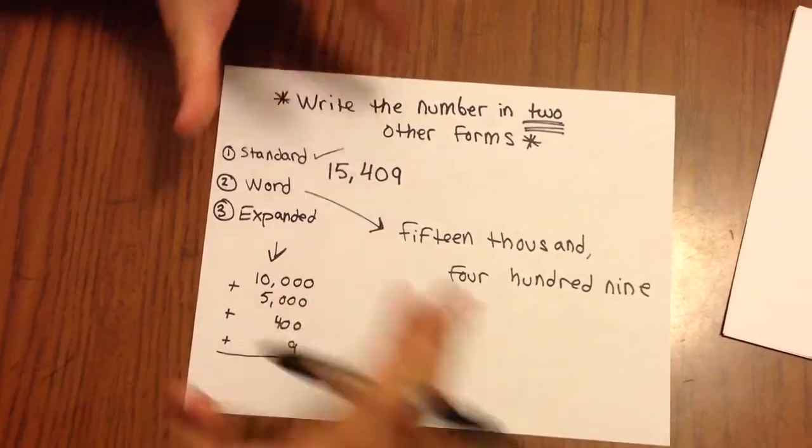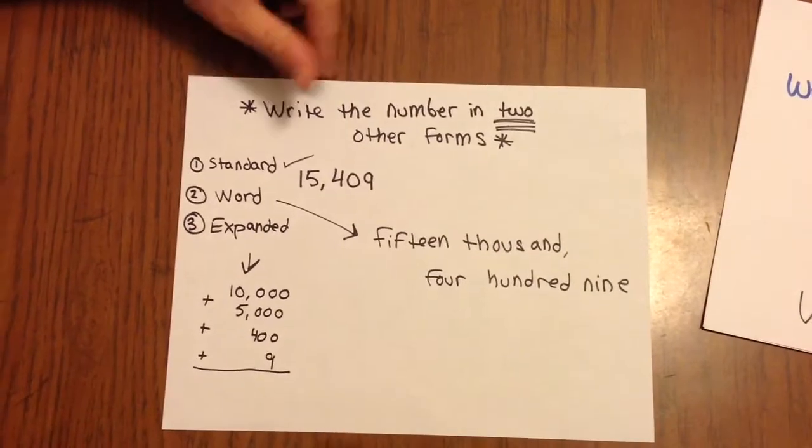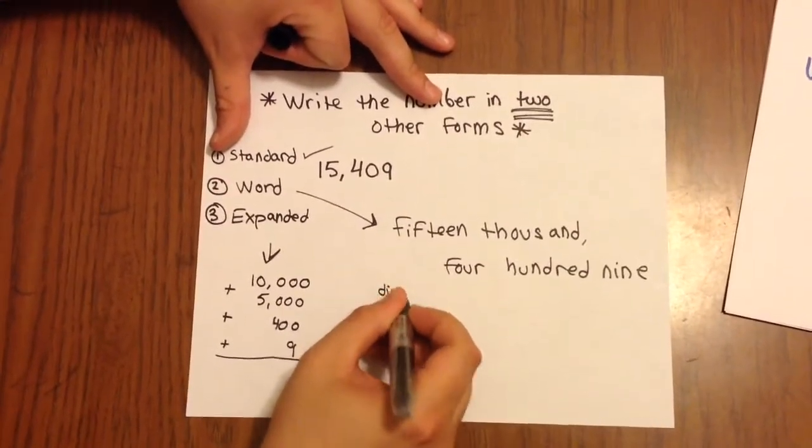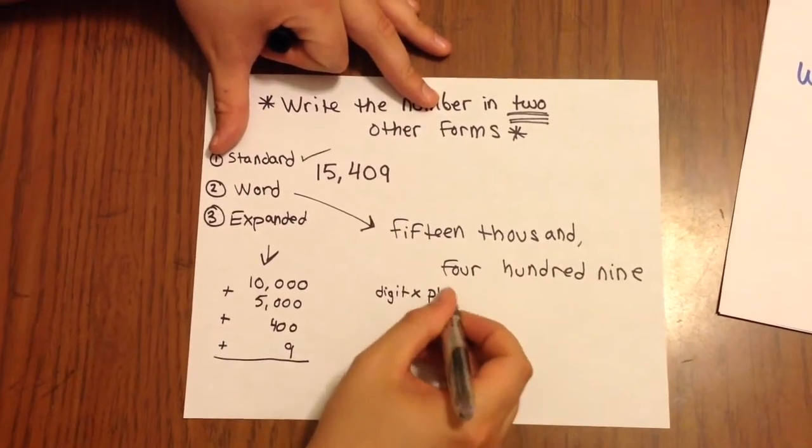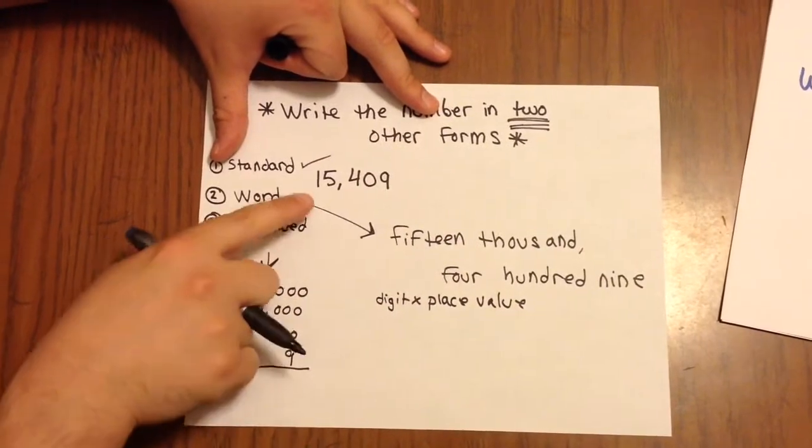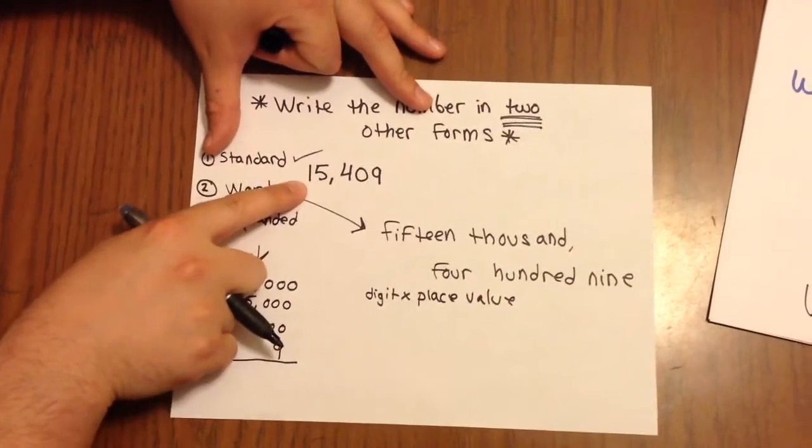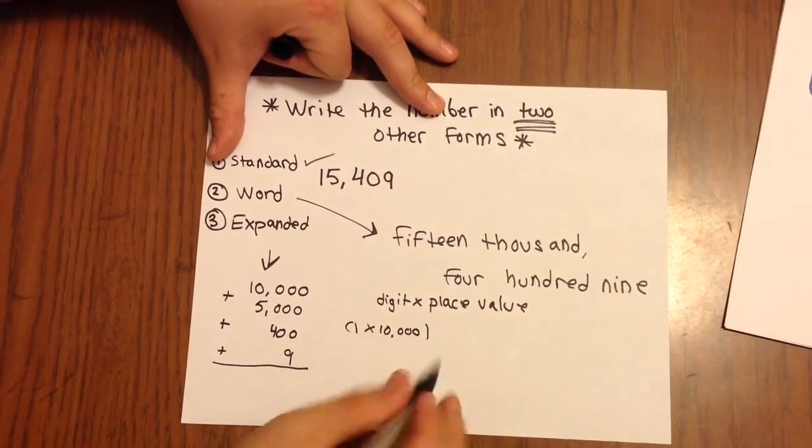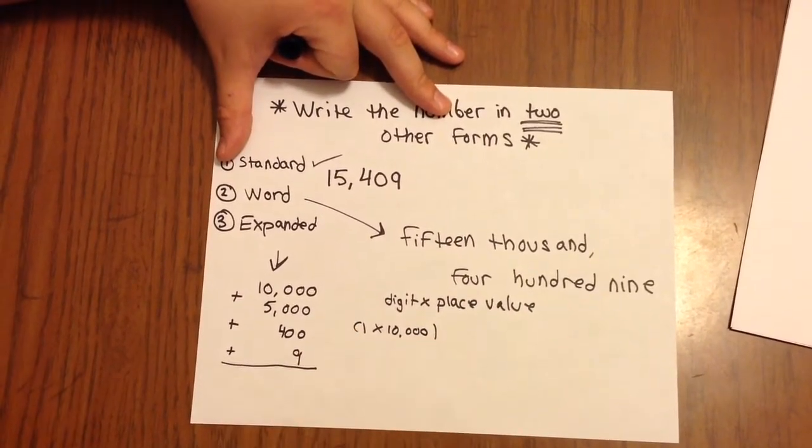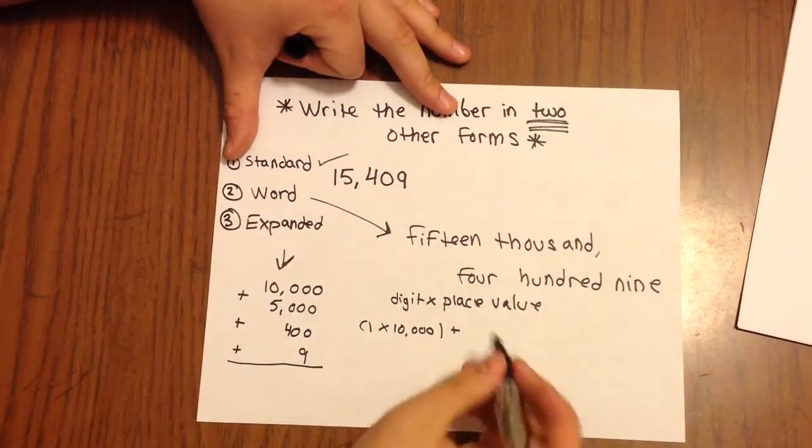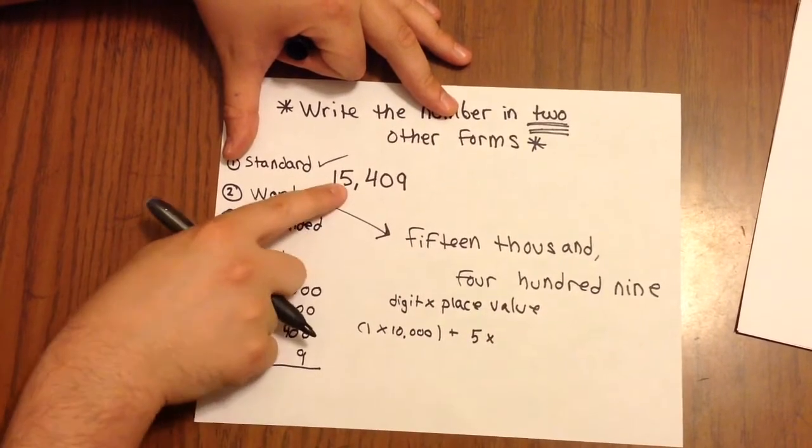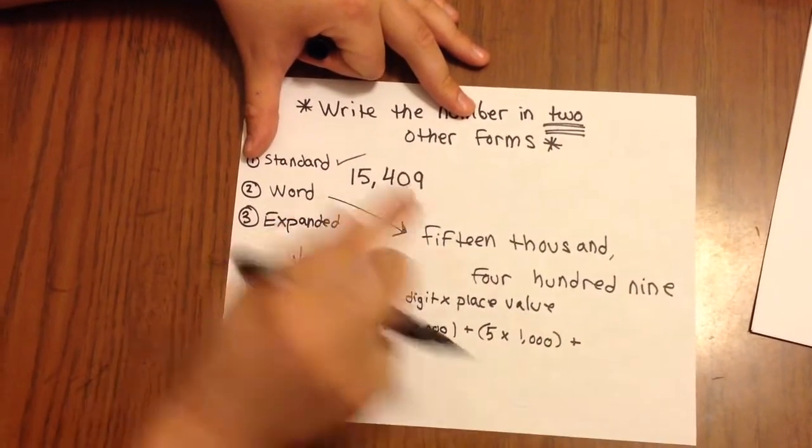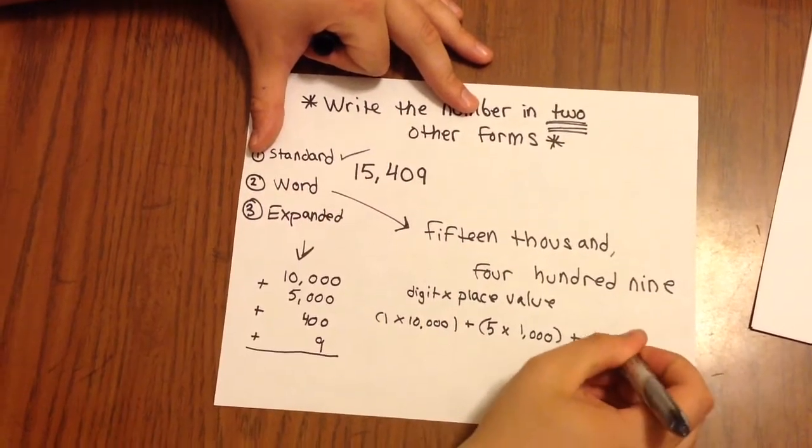The way that the book writes expanded form is a little fancier. So we can call this fancy expanded form. And really all it's doing is taking the digit and multiplying it by the digit's place value. So we're going to start all the way to the left. My first digit is a one, and its place value is 10,000. So I have a one multiplied by 10,000. And I put that in a parenthesis. And I'm going to add that to the next digit, which is 5 times its place value, which is 1,000. And I'm going to put parentheses around this as well.